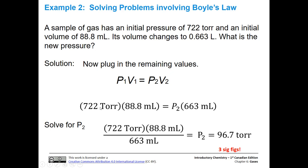So let's plug them all in. So we have 722 torr, 88.8 milliliters, and that's going to be equal to P2 times 663 milliliters. Now again, it's not shown explicitly, but we had to divide both sides by 663 milliliters, in order to cancel out 663 milliliters on this side, and get it over on this side. So we've done that. And we're going to have 722 torr times 88.8 milliliters, divided by 663 milliliters. Milliliters is going to cancel out. We're going to do the math. And that will be P2.